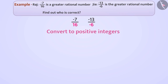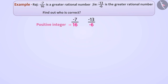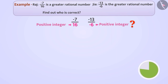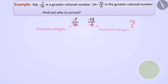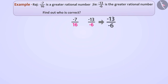The denominator of minus 7 by 16 is already a positive integer, but the denominator of minus 13 by minus 6 is not a positive integer. We will multiply both the numerator and the denominator of minus 13 by minus 6 by minus 1.